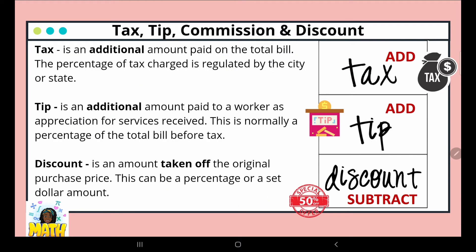Tax is an additional amount paid on the total bill. The percentage of tax charge is regulated by the city or state. Whenever we calculate tax, that's an amount we're going to add to our original amount. Tip is an additional amount paid to a worker as appreciation for services received. This is normally a percentage of the total bill before tax. Discount is an amount taken off the original purchase price. So we add tax and tip, we subtract discount.